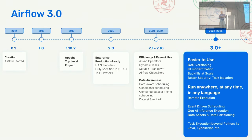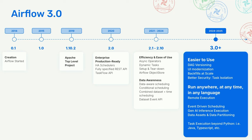In summary, we have two primary themes for Airflow 3. The first is making it easier to use for existing use cases and patterns — based on what you as a community voted for and told us. This includes DAG versioning, the Airflow UI, easier version upgrades, and many more features. But we're also excited about dramatically expanding Airflow with the ability to run tasks anywhere, anytime, in any language, which covers capabilities such as event-driven scheduling and so much more.